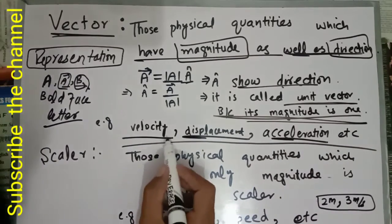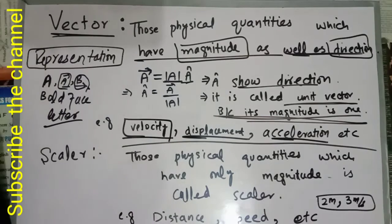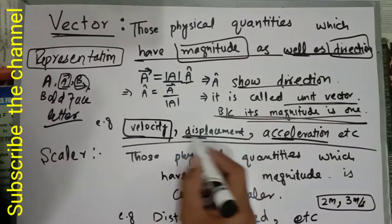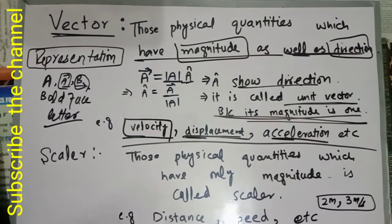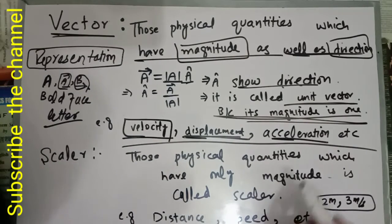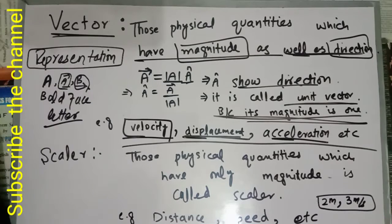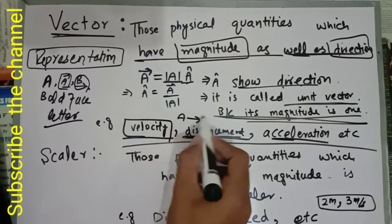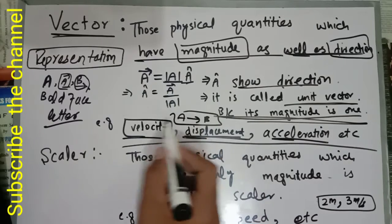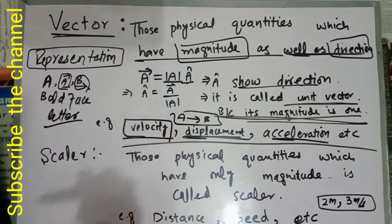Velocity is a vector quantity because it has proper direction. Displacement is also a vector quantity with proper direction. Acceleration is a vector quantity. Displacement is the shortest distance between two points from A to B with proper direction.